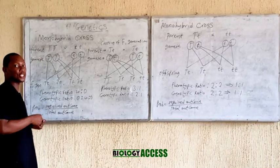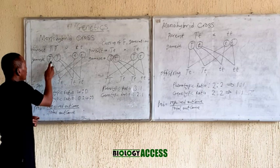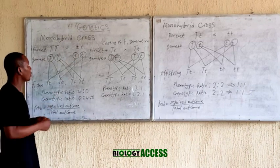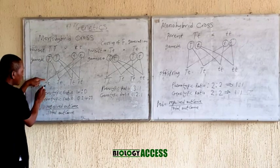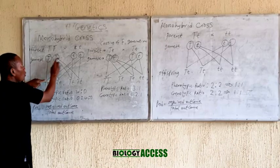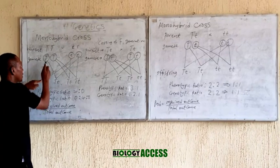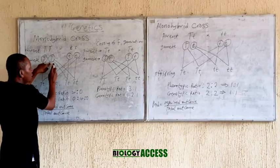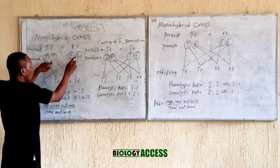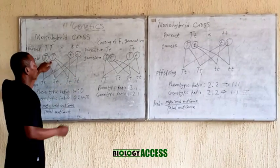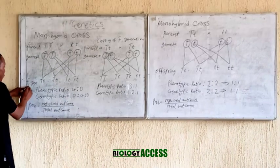From my previous video, you can check out how to get the gametes for this particular crossing. So this is the gamete for the tall pea plant and this is the gamete for the short pea plant. When we combine them, we get capital T and small t in all offspring. This gives us the First Filial generation — the F1 generation.